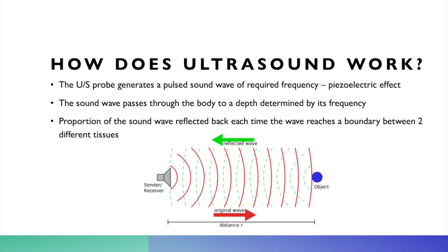In this picture, you have the original wave being produced by the receiver. It hits an object; the distance it travels before hitting the object is R. The reflected wave is delivered back to the transducer, and those waves cause the piezoelectric crystals to vibrate. It is that vibration that causes the electronic signal to be formed, and this is what creates the picture.